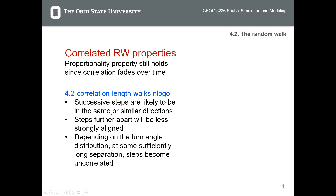Successive steps are likely to be in the same or similar direction, meaning there is strong correlation between them. But steps further apart will be less strongly aligned. If you compare step one and step 100, you will find a huge difference in direction, because after each step there is a small change of direction that accumulates and becomes larger and larger. This is called the fading of correlation.